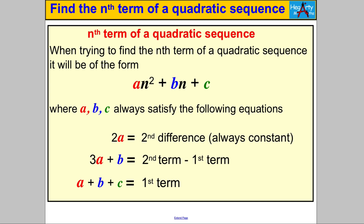The theorem says that when we are trying to work out the nth term of a quadratic sequence, it will always be of the form an² + bn + c, where we have to find a, b, and c. It is always true that two lots of a give you the second difference — that second difference that is always constant. 2a is always equal to that second difference.